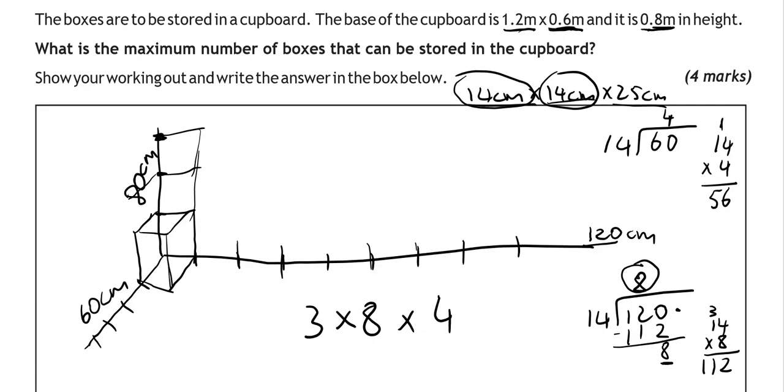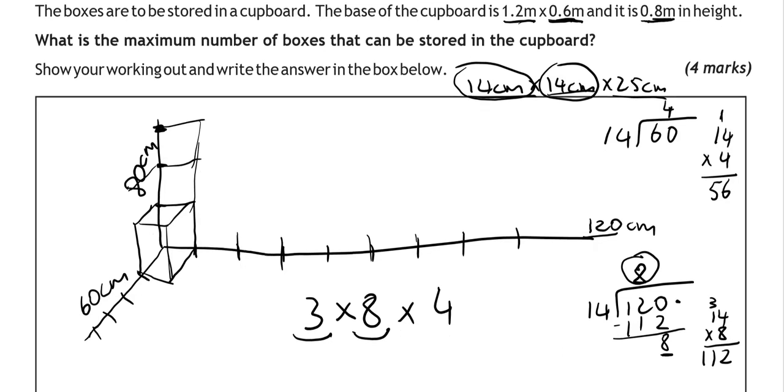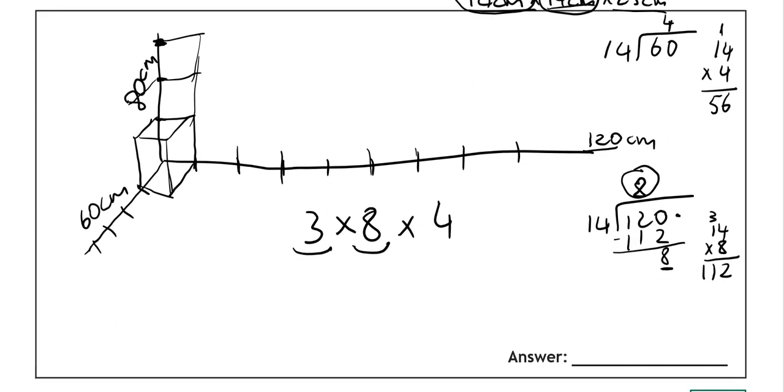So if we just multiply these numbers, it's going to give us how many boxes. So 3 times 8 is 24. Times 4 is 96. So 96 boxes.